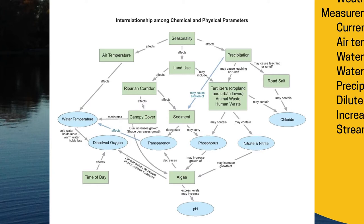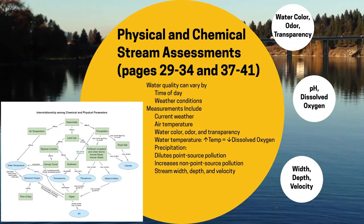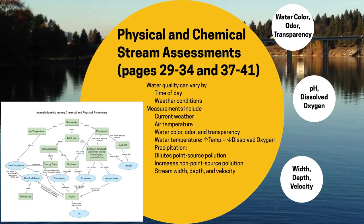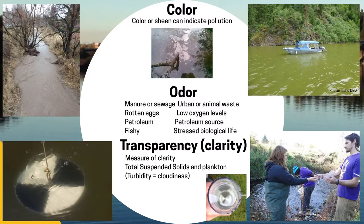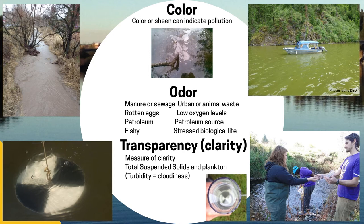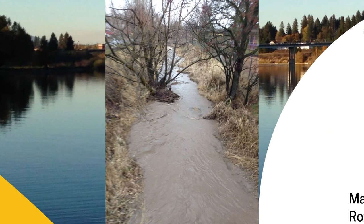The first data you will collect in this assessment is to describe the weather. The weather affects many physical and chemical characteristics of the stream. Warmer air will result in warmer water, in turn reducing the dissolved oxygen concentrations. Rainfall can increase non-point source pollutants and decrease the concentration of point source pollutants. Use your senses to gather data about some water quality parameters. Water color can tell us a lot about pollution problems — brown water likely contains a lot of silt runoff from erosion.